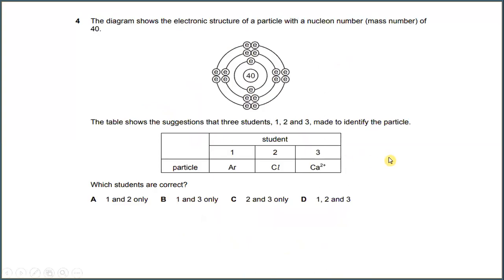Number 4. The diagram shows the electronic structure of a particle with a mass number of 40. The table shows the suggestions that 3 students made to identify the particles — argon, chlorine, and calcium. Which students are correct? Which have the mass number of 40? Argon has a mass number of 40, and calcium also has a mass number of 40. The answer for this is B.